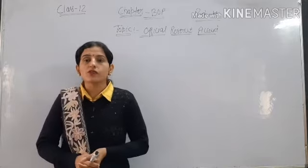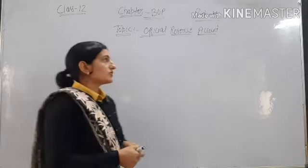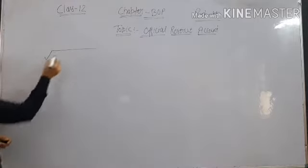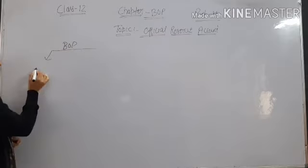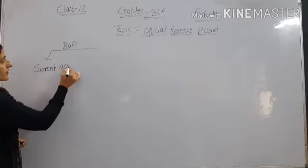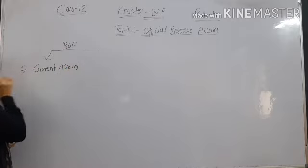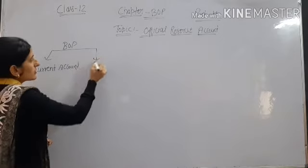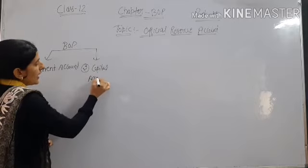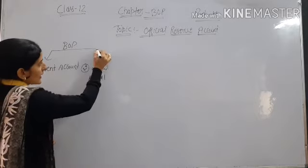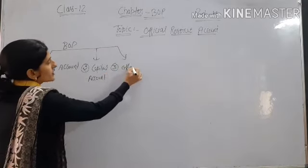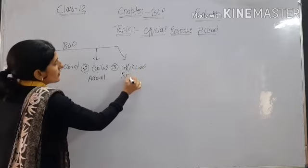Then we talked about the components of BOP — what are the parts of BOP. In components of BOP we include: first, current account; second, capital account; and third, which we will discuss today, is officially reserved account.